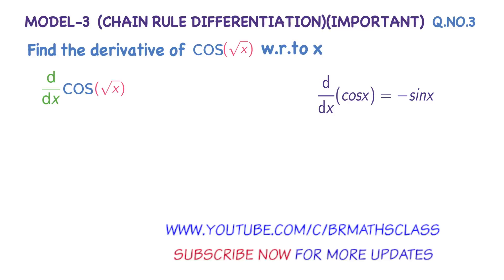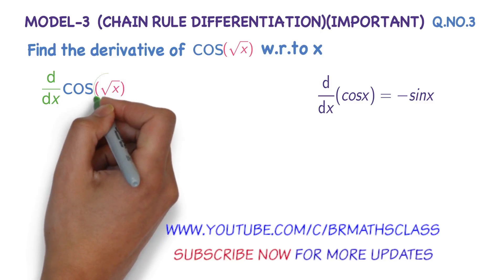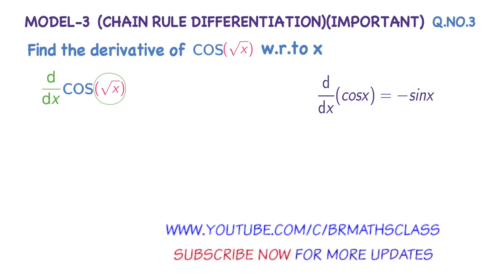You observe the question. We need to find the derivative of cos(√x). We don't have any direct formula for this. A very similar formula is the derivative of cos x. As this is the third question in chain rule differentiation, I think you'll be familiar with the process. However, I will take time to explain this question clearly.